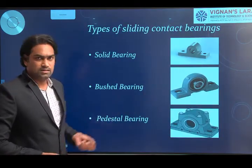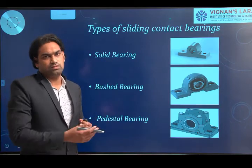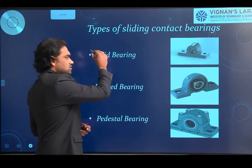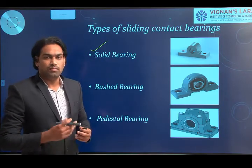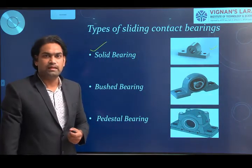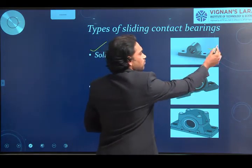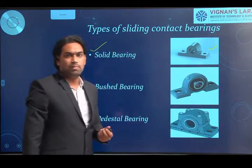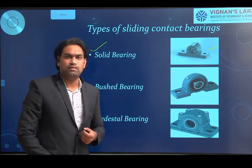In the classification of sliding contact bearings (continued), for radial type loads we have three types. The first is the solid bearing: it is a simple casting of cast iron — a simple cast iron block with a drilled hole through which the shaft is inserted or accommodated, and a base provided to assemble the bracket to the machine component. This is the basic type of sliding contact bearing, called a solid bearing.